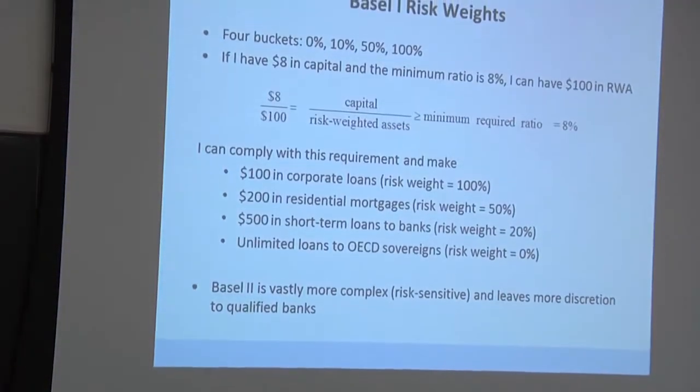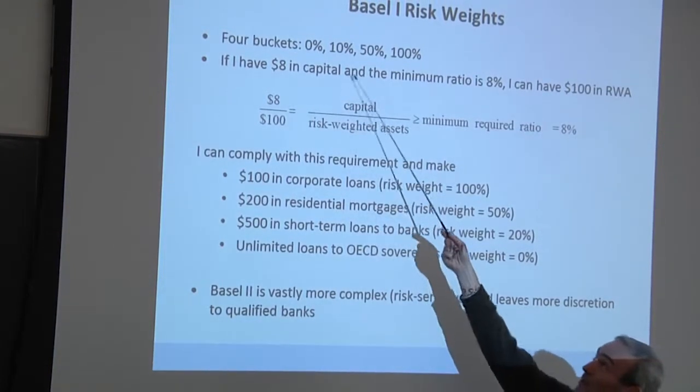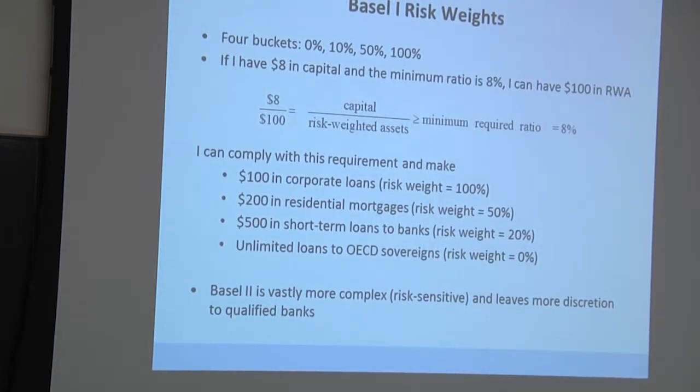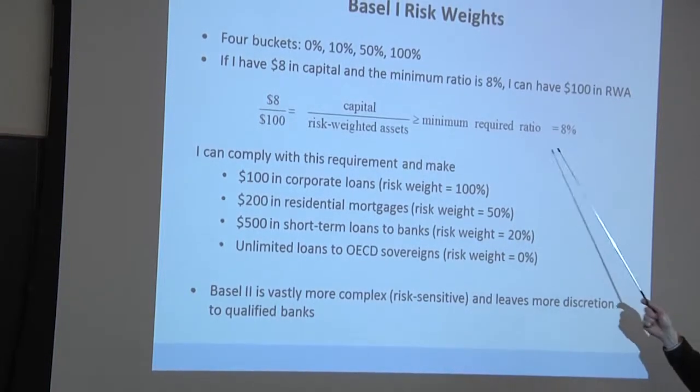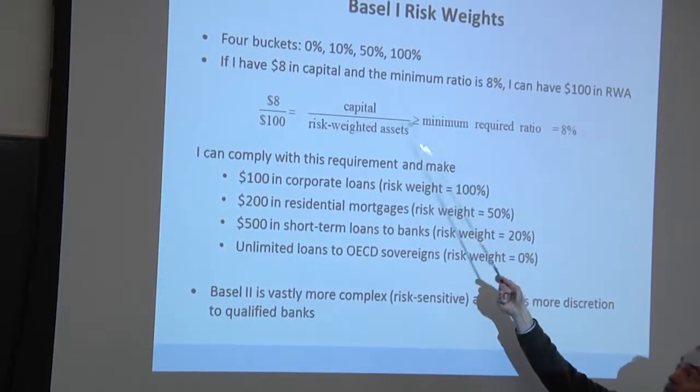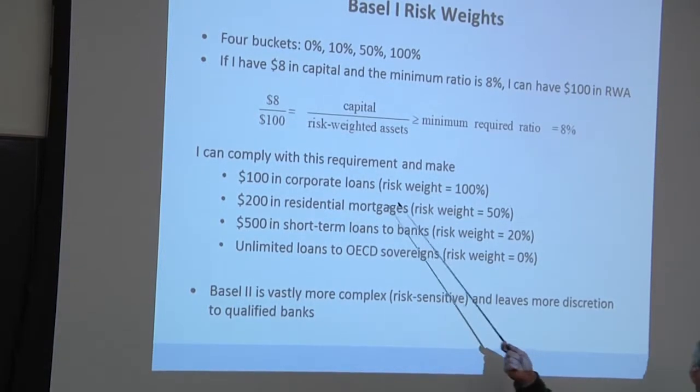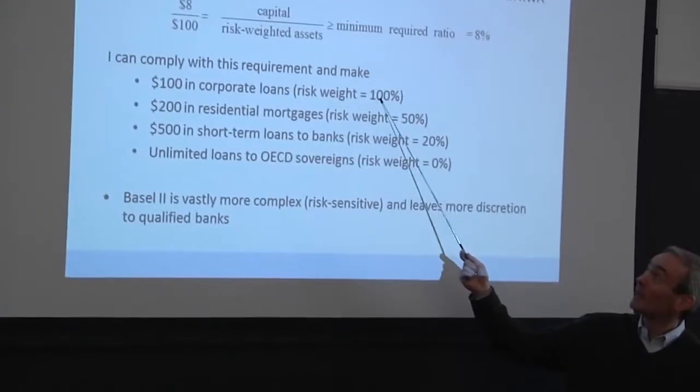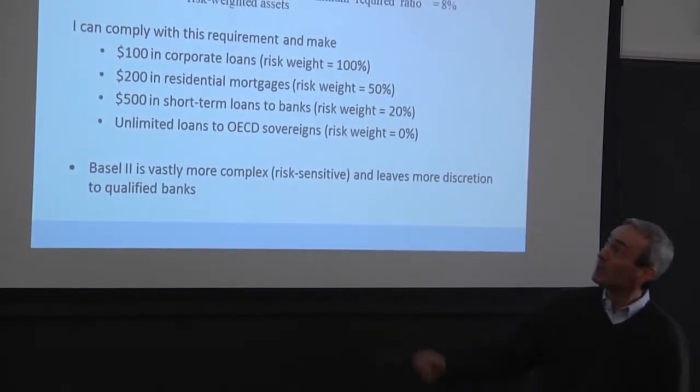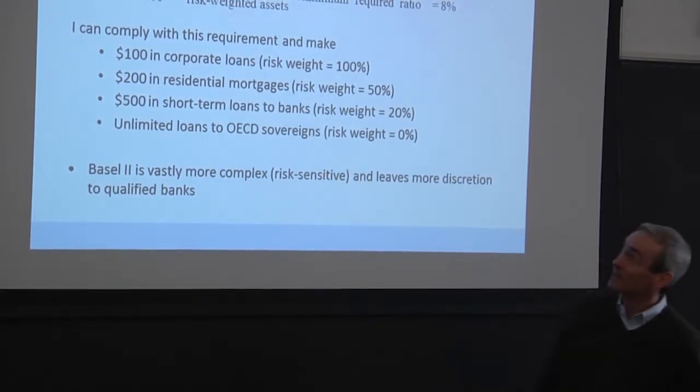So Basel 1 had just four categories. That should be 20%. There was a 10%, but it was never used as far as I can tell. So it's 0%, 20%, 50%, 100%. Suppose I've got a minimum required ratio of 8%. And let's suppose I have $8 in capital. So that allows me to have up to $100 in risk weighted assets, right? To satisfy that ratio. So what can I do? How can I comply with this requirement? Well, so I can make $100 in corporate loans because the risk weight on all corporate loans is 100%. So $100 in corporate loans, that's equal, the risk weighted assets are equal to total assets in that case. So I could make up to $100 in corporate loans.